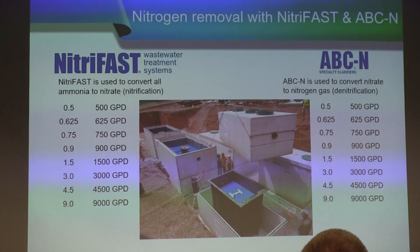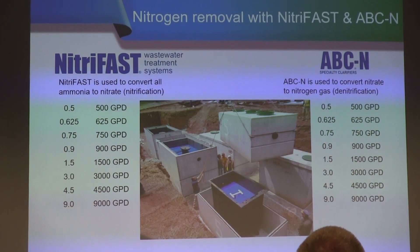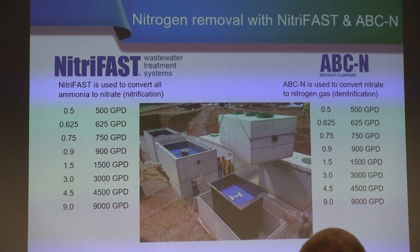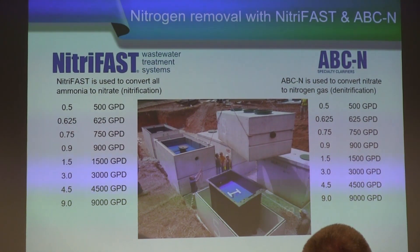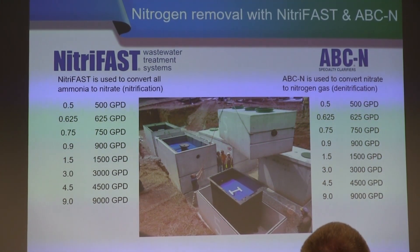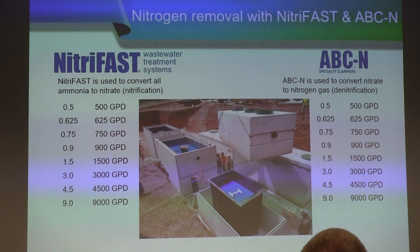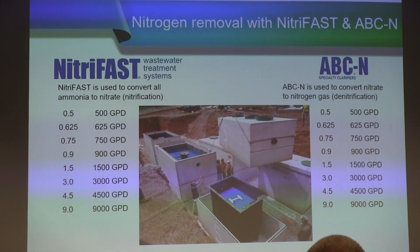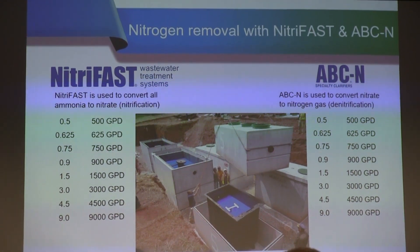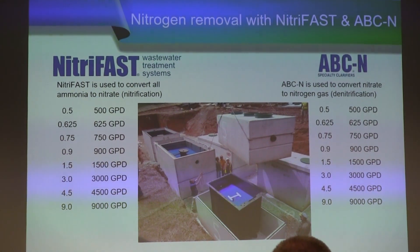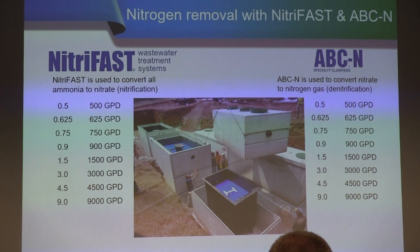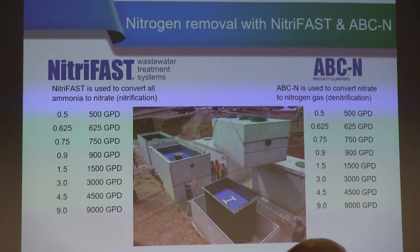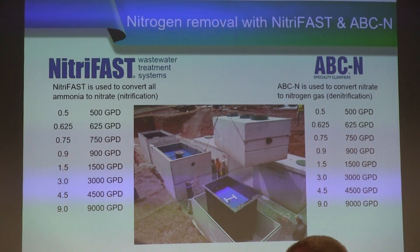A lot of times it's not just BOD and TSS that we're trying to remove. When you're looking at FAST systems, you also want to be able to treat total nitrogen. We have two products that we would typically follow a FAST system with — whether it's a Micro FAST or a high-strength FAST. When you really need to target a low total nitrogen number, we follow a Micro FAST or high-strength FAST with the NitroFAST system, which handles additional nitrification — the conversion of organic nitrogen and ammonia to an oxidized form of nitrogen, nitrate.